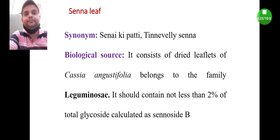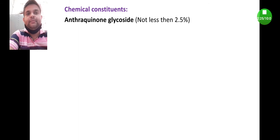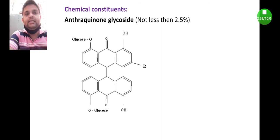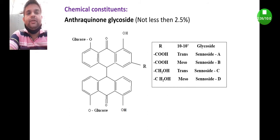Coming to the chemical constituents, Senna is a glycoside-containing drug. It contains anthraquinone glycoside. There are four different types of sennoside glycoside present in Senna, which is known as sennoside A, sennoside B, sennoside C, and sennoside D. It is a di-anthraquinone glycoside. You can find here two anthraquinone nucleus are attached to each other. Moreover, the glucose, means the glycone part, is attached by O bond. That's why sennoside is an example of O-glycoside.